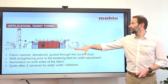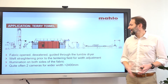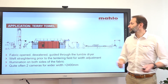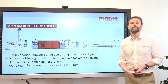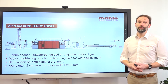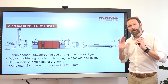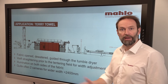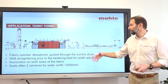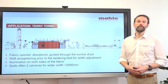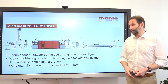Here are some application examples. It is important to have the fabric opened, dewatered, and guided through the tumble dryer. The weft straightening is prior to the tentering field because that is the final step where we can control, improve, and repair things. The illumination on both sides of the fabric means we can use either transmission mode or reflection mode — both are possible and give many opportunities to get the best picture from the fabric. For widths greater than 2.4 meters we often use two cameras, giving a better picture.